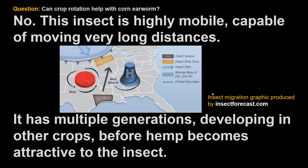Crop rotation is useful for insects that are not very mobile between growing seasons. Corn earworm is not one of those — furthermore, there are multiple generations during a season, so if you have corn earworm in your area, it may have had one, two, or three generations on other crops before they start moving into hemp late in the season.